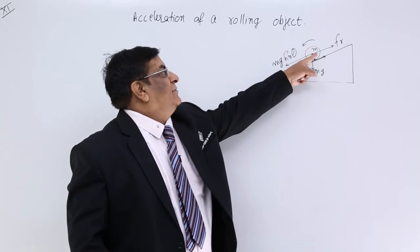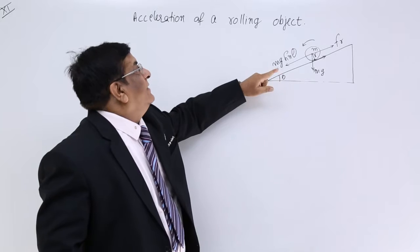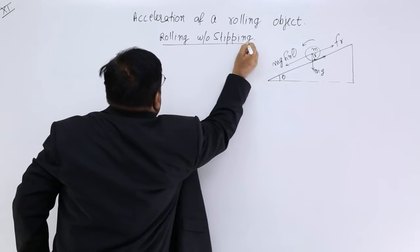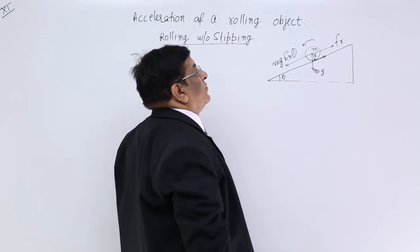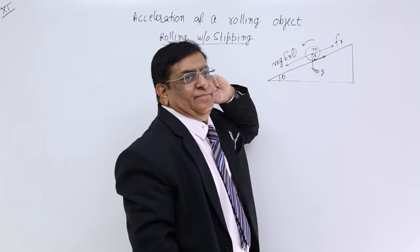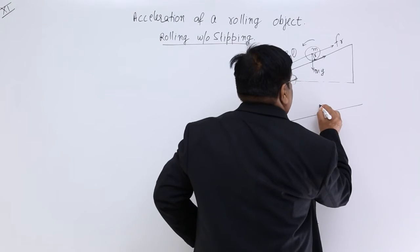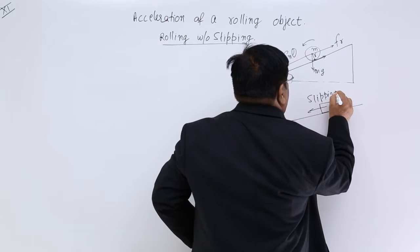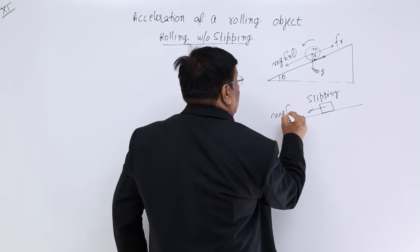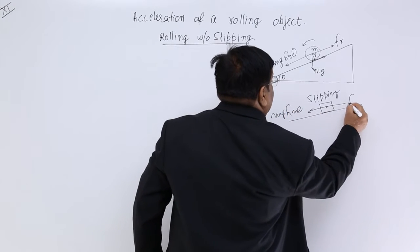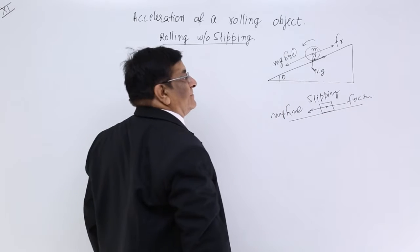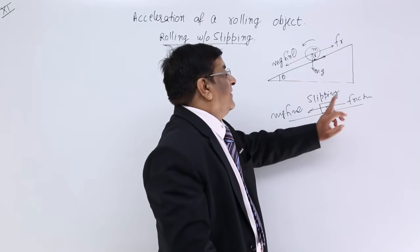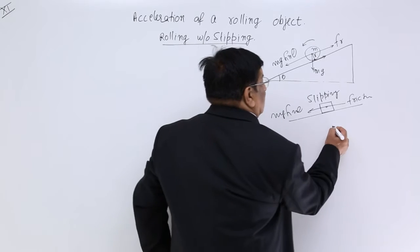Here is a rigid body coming down an incline with rolling without slipping motion. We have to calculate its acceleration. If the body were slipping, the force down the incline is mg sin theta, friction acts upward, and the acceleration would be mg sin theta minus friction divided by mass.